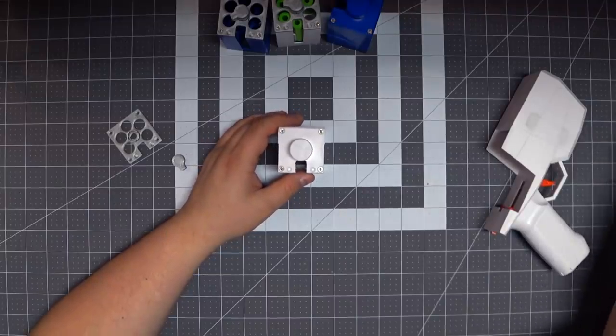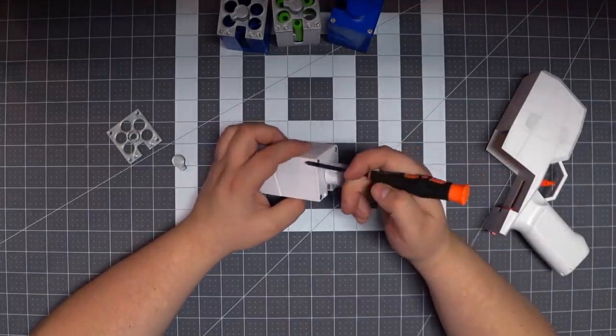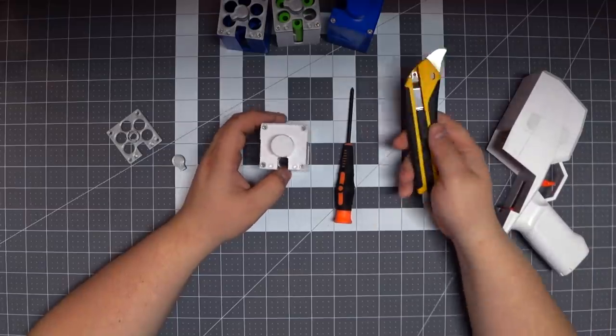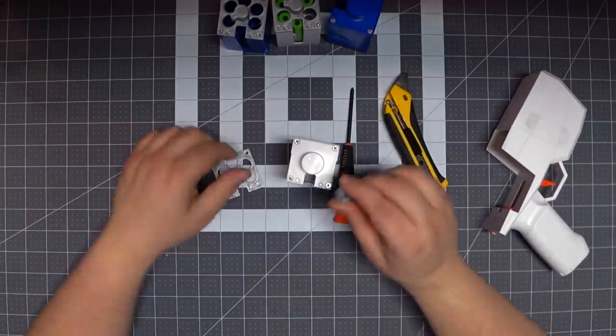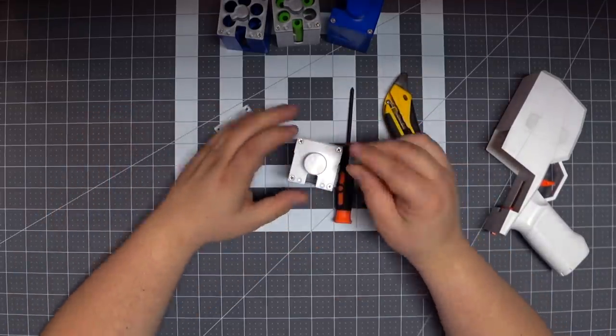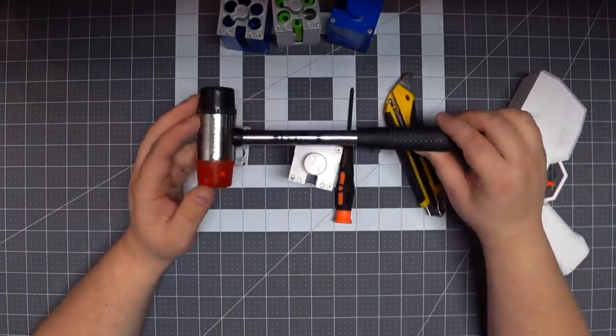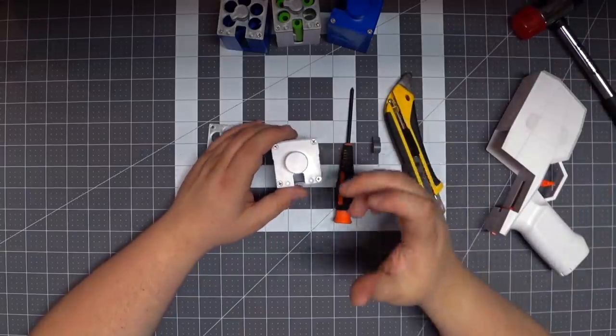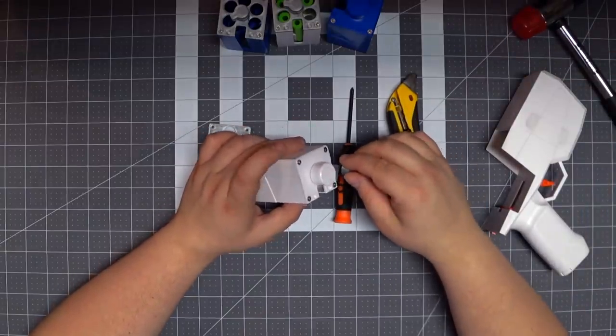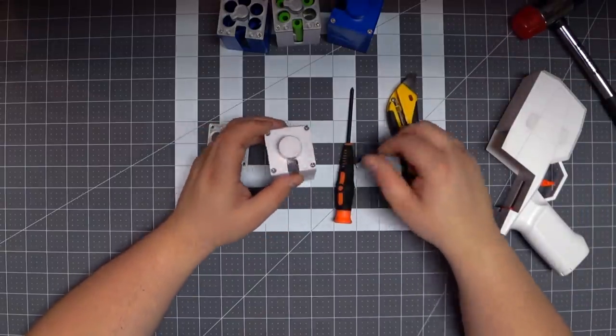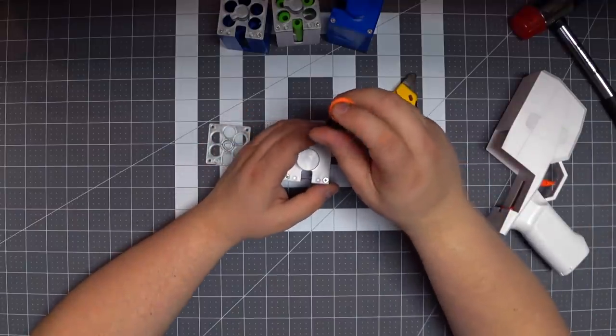So the tools you're going to want: a screwdriver of some description to undo these four screws on the back, some kind of hobby knife if you're printing these out because chances are this is going to be too tight to fit on there and you're probably going to have to cut it out a little bit, and I would recommend some kind of rubber hammer to kind of force them on because it needs to be tight enough that it stays on there but not loose enough that it would fall off by any imagination. So it's really easy.